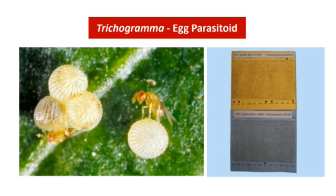Let us see some live examples of biocontrol agents. Trichogramma are minute wasps which get attached to insect eggs like a parasite. They sit on the egg of the pest and destroy it. So this Trichogramma species is a common biocontrol agent.